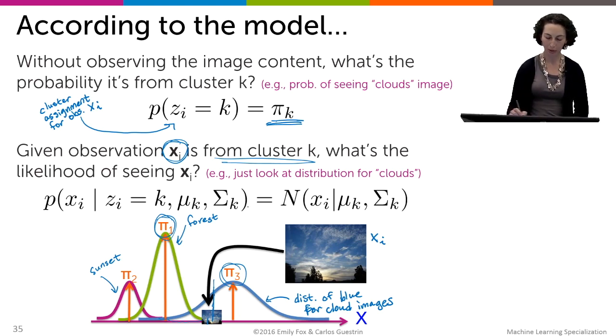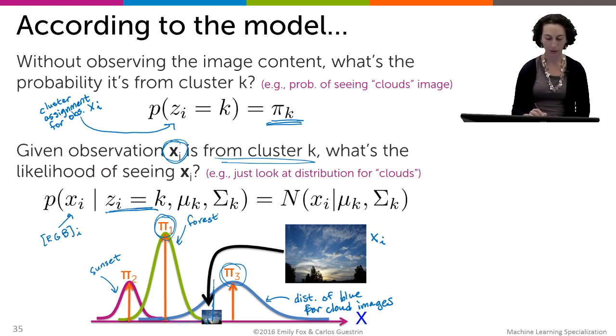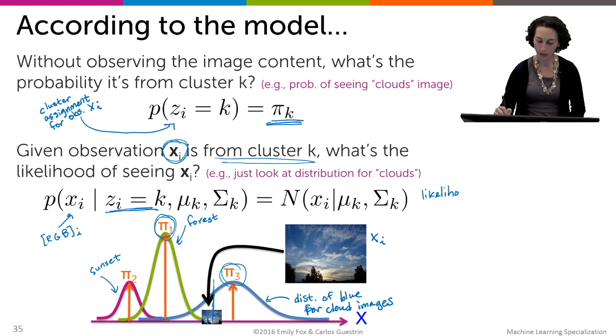Just to circle back and make sure we're very clear: when we're looking at the probability of an observed RGB vector for image i, given that it's in cluster k, then this is just a single Gaussian with mean mu_k and covariance sigma_k. This is referred to as the likelihood term, whereas before we called this the prior term.